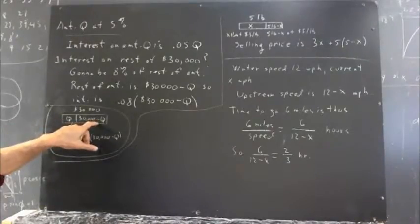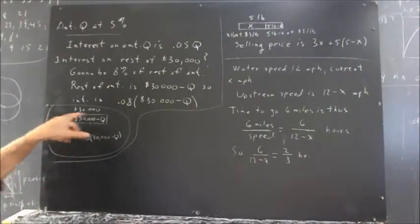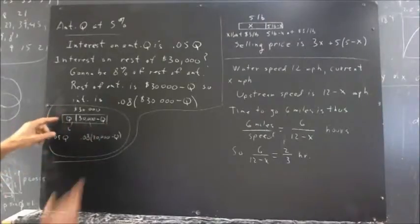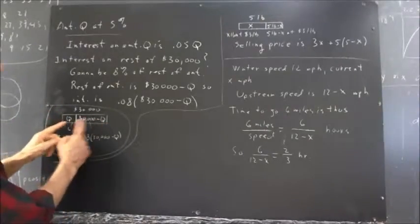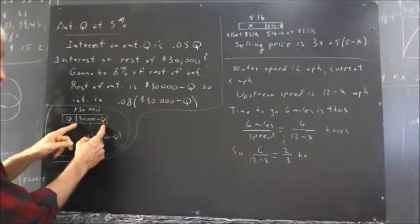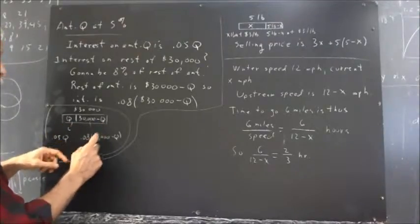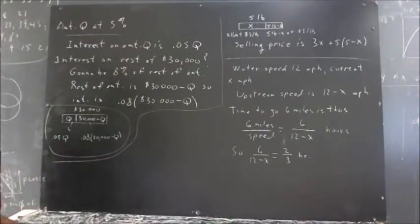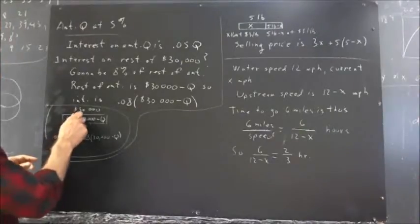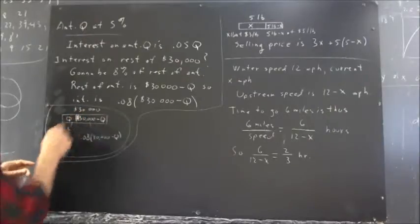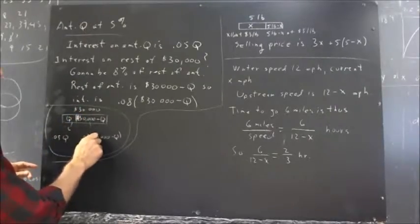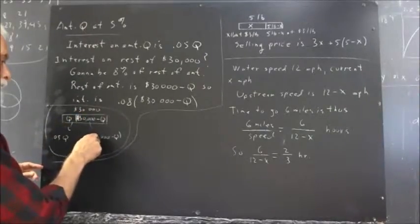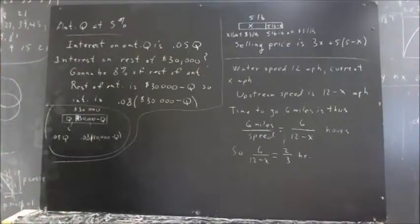The rest of it is invested at 8%. What's the rest of it? If this is $30,000 and this is Q, this is $30,000 minus Q. So it's going to be 0.08 times $30,000 minus Q. I should probably sneak in a couple of dollar signs here to be consistent, but there isn't a lot of room. Let's just pretend we understand that's a dollar sign.